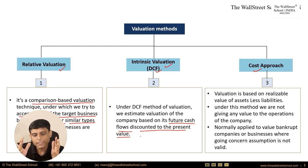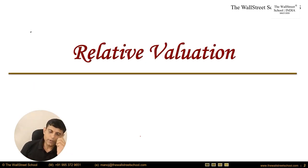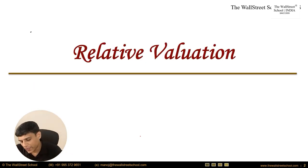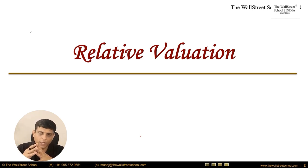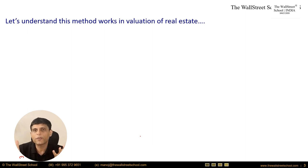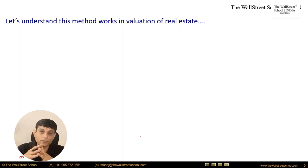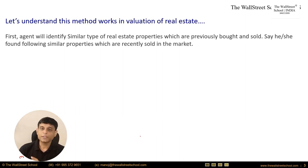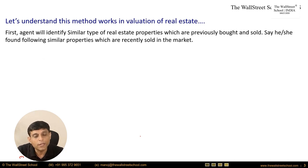The first two methods — relative valuation and DCF — are applicable for going concern companies. The cost approach is normally applied for bankrupt companies where there is no business to value. Now let's understand the relative valuation technique in detail using a real estate example.